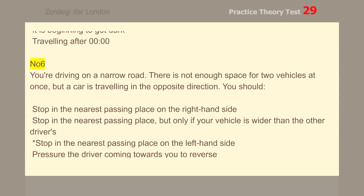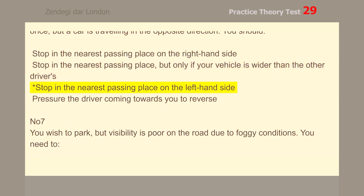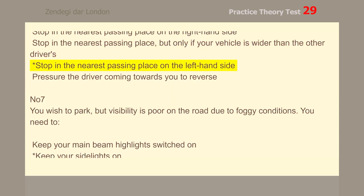Number 6. You're driving on a narrow road. There is not enough space for two vehicles at once, but a car is traveling in the opposite direction. You should stop in the nearest passing place on the left-hand side.